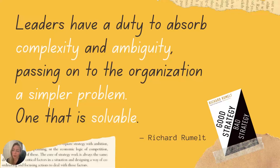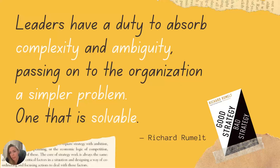Let's start with a quote from one of my favorite books, by Richard Rumelt — it's called Good Strategy, Bad Strategy. You should definitely read it. He says: 'Leaders have a duty to absorb complexity and ambiguity, passing on to the organization a simpler problem, one that is solvable.' I've seen OKRs used in the opposite way — as a very tactical, short-term achievement-focused tool. The core value of objectives and key results is really about transforming ambiguity into something people can actually get behind.